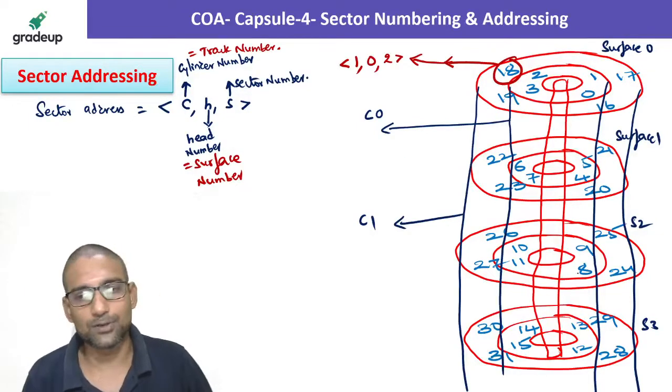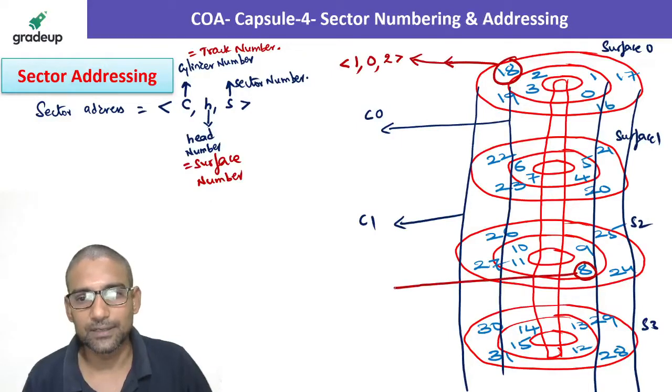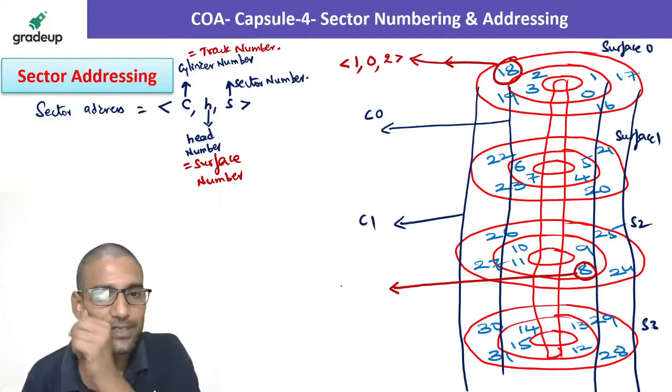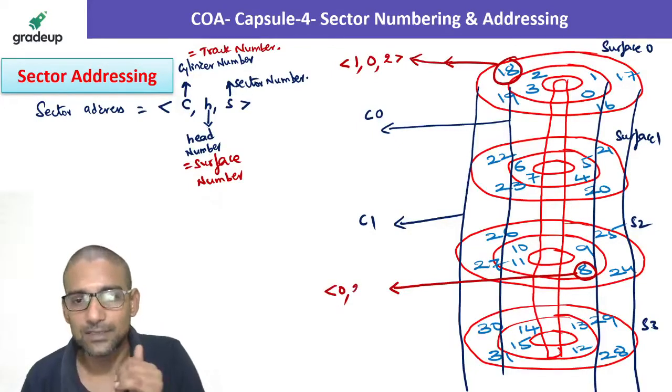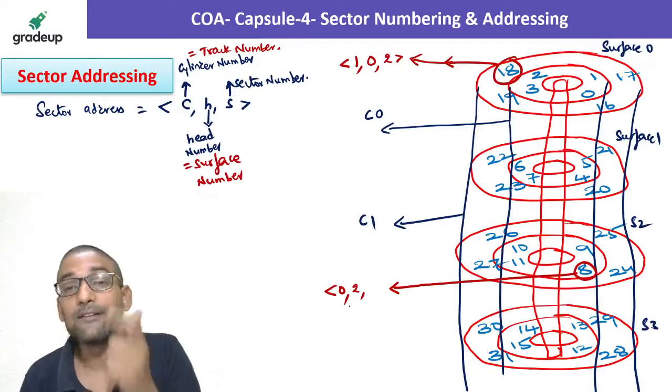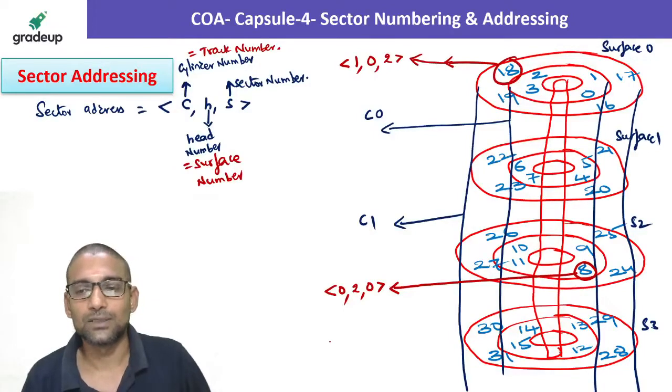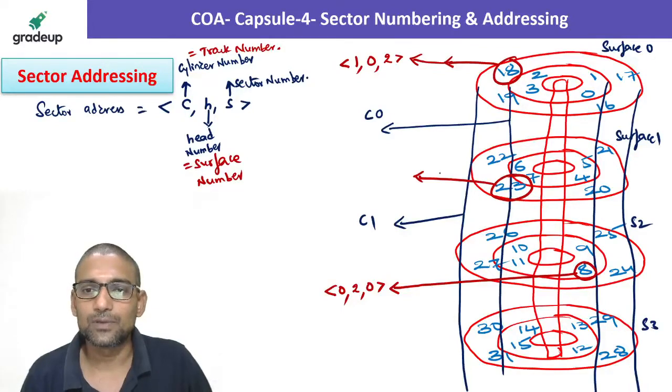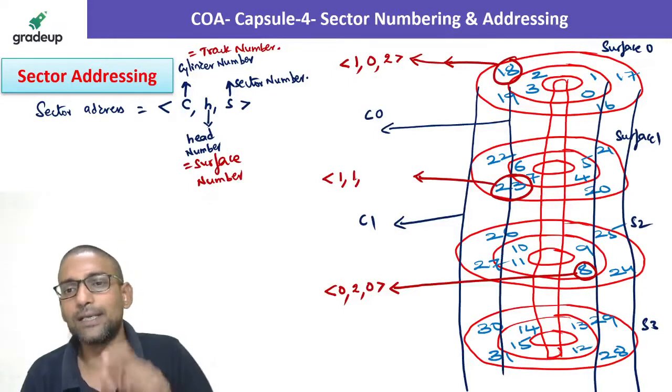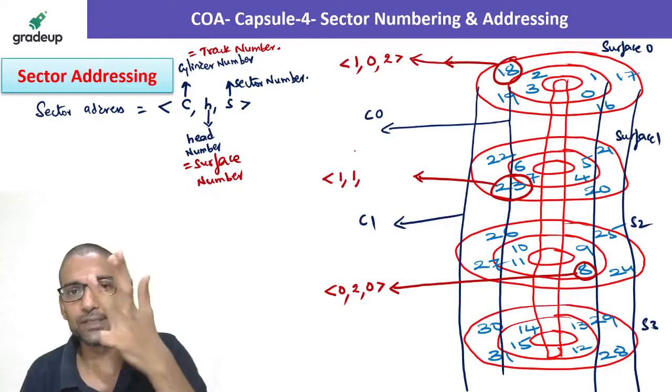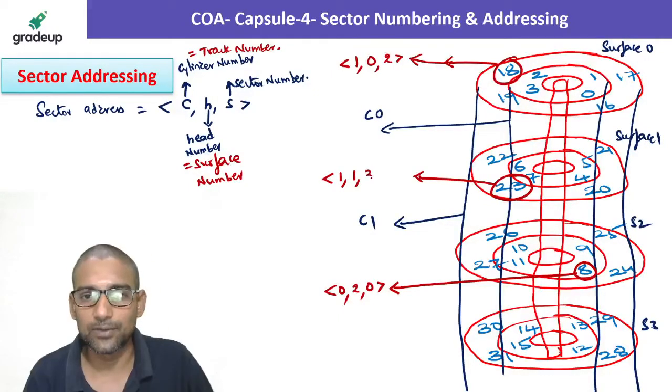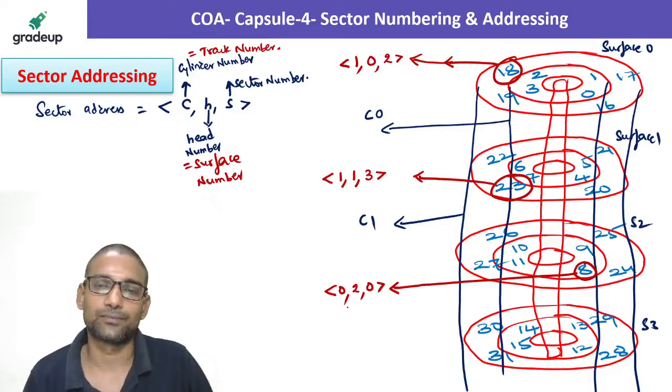Similarly, I want the address of sector number 8. It is on which cylinder? Cylinder number 0. Surface? Surface number 2. On that it is very first sector, 8, so 0. In the same way, suppose I want to identify sector number 23. The address would be? It is on cylinder number 1, surface number 1. On that, it is sector number 3.